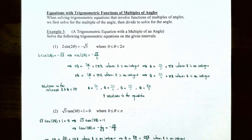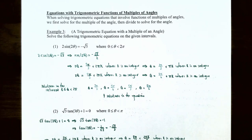Now let's talk about solving equations with trigonometric functions of multiples of angles. When solving a trigonometric equation involving multiples of angles, we first solve for the multiple of the angle and then divide to solve for the angle itself. In example three, we'll solve trigonometric equations with a multiple of an angle on the given intervals.